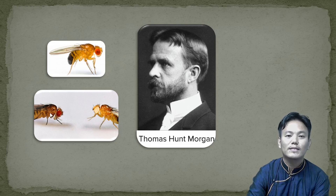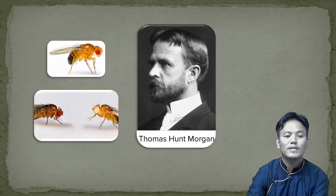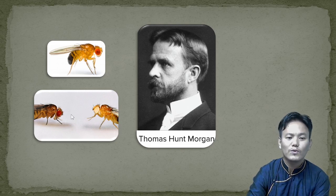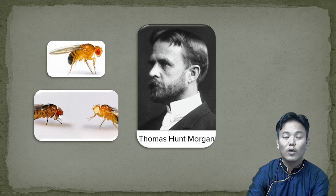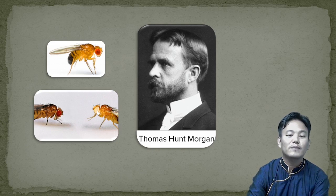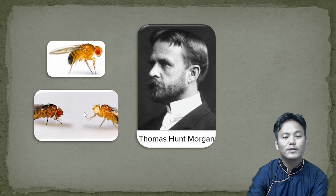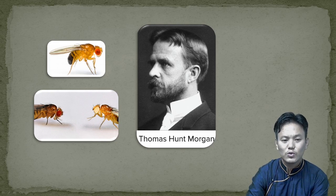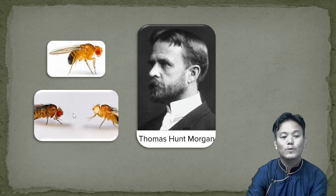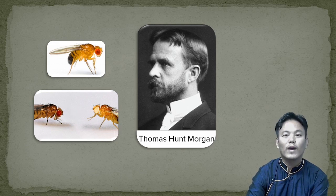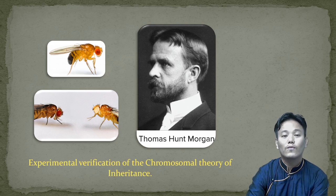Morgan realized that what Sutton and Boveri had proposed was actually true. He found out that the gene which controls the eye color of the fruit flies is located on the X chromosome. How the insects inherit the X chromosome was exactly the same as how they inherited the eye color. The normal eye color is red, but if the gene is mutated it becomes white. His experiment became the verification of the chromosomal theory of inheritance.